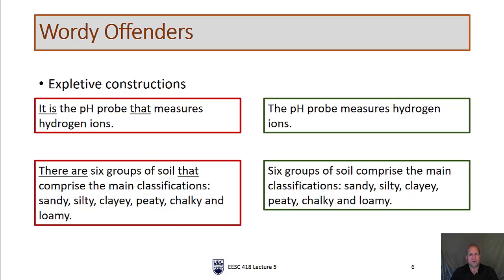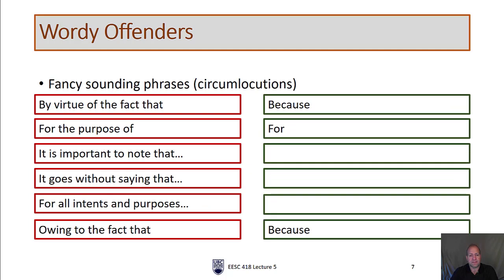The next is a special type of phrasing called expletive constructions. Expletive constructions start with 'it is' or 'there are,' and in this case, 'it is' and 'there are' are completely empty words—they're not even the subject of the sentence. So 'it is the pH probe that measures hydrogen ions' can be shortened to say 'the pH probe measures hydrogen ions.' Similarly, 'there are six groups of soil that comprise the main classifications: sandy, silty, clay, peaty, chalky, and loamy' can be shortened to just say 'six groups of soil comprise the main classification.' In almost all of these cases, when you see these expletives—something starts with 'it is' and then some phrase and then 'that' and then another phrase that describes it—you can simply rephrase it by removing those expletives.